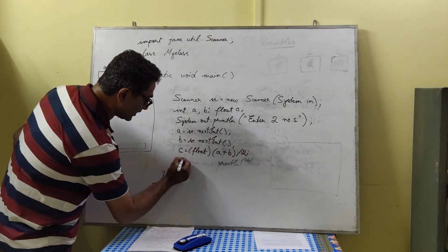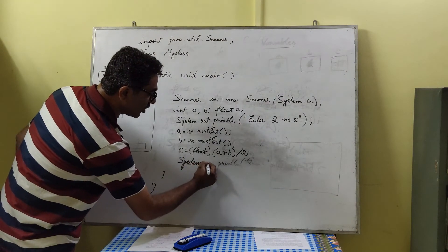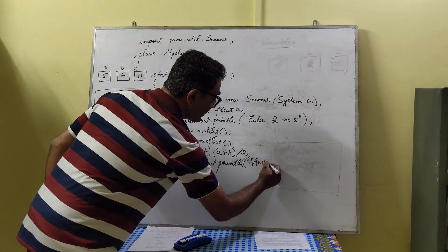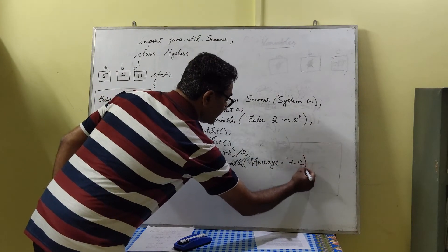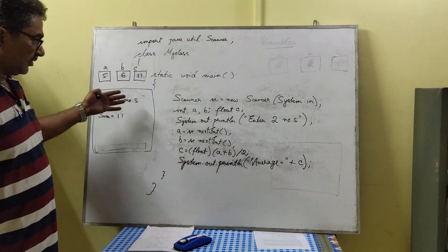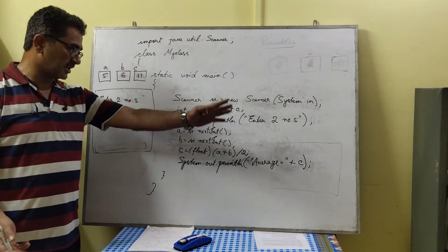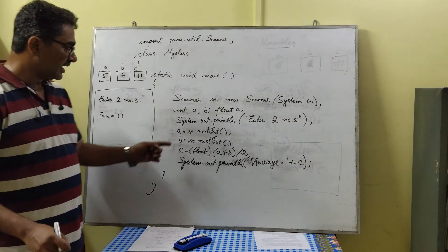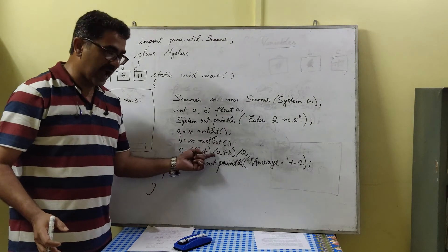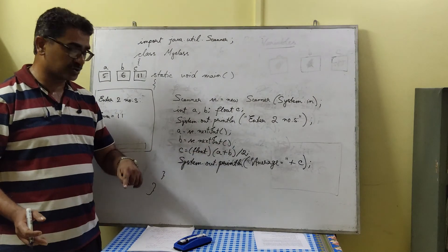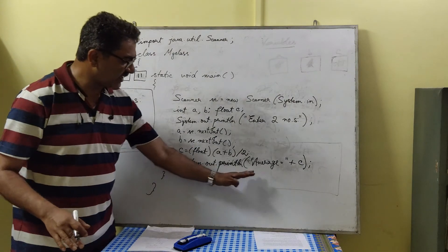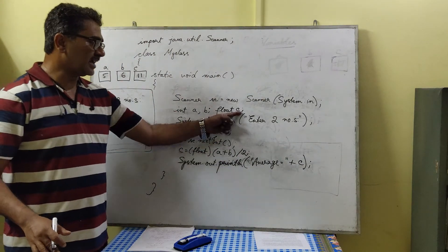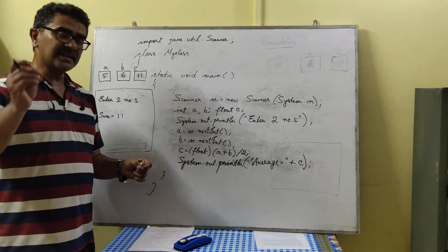We then print the result using system.out.println with 'average = ' joined with c. When the program runs, it prompts the user to enter two numbers. The two numbers are added, divided by 2, and type-cast to float to get the decimal result. The variable c must be of float type to store the decimal average, and the output displays 'average = ' followed by the computed value.